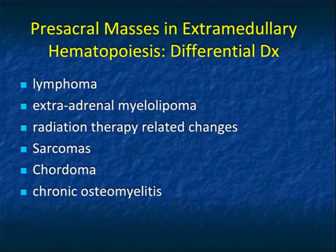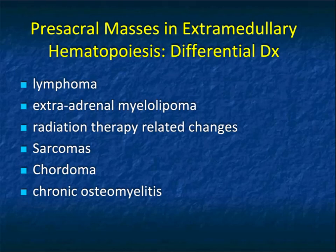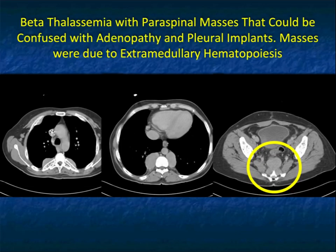Presacral masses can be seen in extramedullary hematopoiesis — these can be confused with lymphoma, extra-adrenal myelolipoma (usually fatty density), radiation therapy-related changes, sarcomas when large, and chordomas when very large, though chordomas usually show bone destruction. Here's a patient with beta thalassemia and paraspinal masses — looking at the sacrum, you could think of presacral mass, rectal cancer, lymphoma, chordoma, or sarcoma. But then you see all these changes also in the chest, particularly in the paraspinal regions, and you recognize you are dealing with a great mimicker: extramedullary hematopoiesis in beta thalassemia.